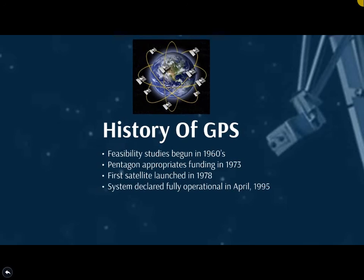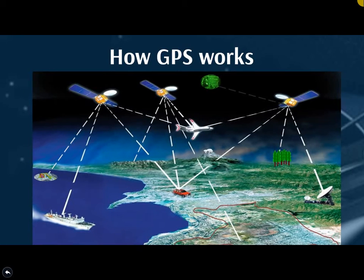Now we will look at the operation and working principle of the GPS. The GPS concept is based on the time and the known positions of specialized GPS satellites. The satellites carry very stable atomic clocks that are synchronized with one another and with the ground clocks. Any drift from true time maintained on the ground is corrected daily. Similarly, the satellite locations are known with great precision. GPS receivers have clocks as well, but they are less stable and less precise.